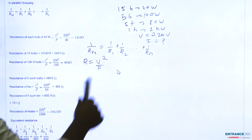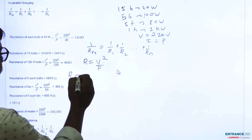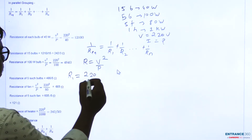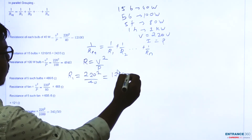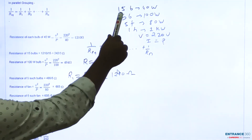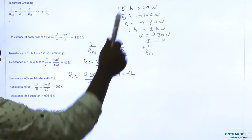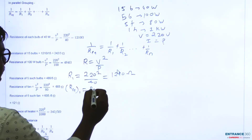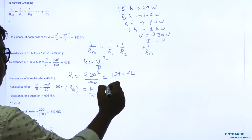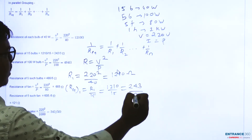First, we find the resistance of the 40W bulbs. R1 = V²/P = (220)²/40 = 1210 ohm. Since 15 such bulbs are connected in parallel, the equivalent resistance for this group is R_eq1 = 1210/15 = 242/3 ohm.